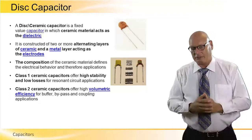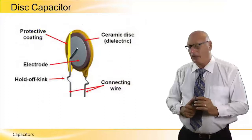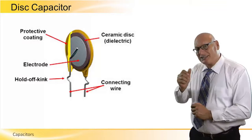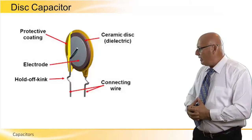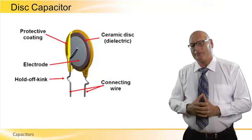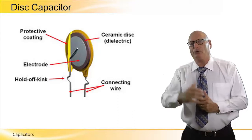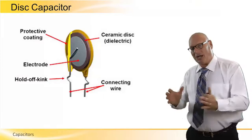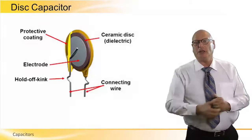Here are some examples of how ceramic capacitors look, and here is the structure: we have a protective coating around the electrode, the two leads (connecting wires), and the dielectric material — which is the ceramic disc itself. It has a fixed capacitance for high frequencies. Because of its lack of polarity, voltage is not charged on it, so there is no charging and discharging as with the electrolytic. But it is used for high frequency, high stability applications.